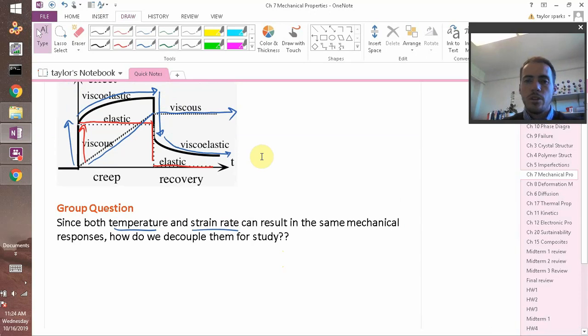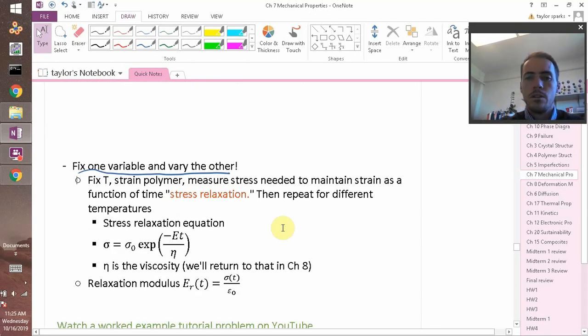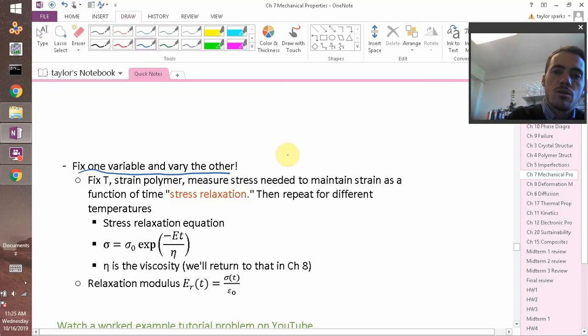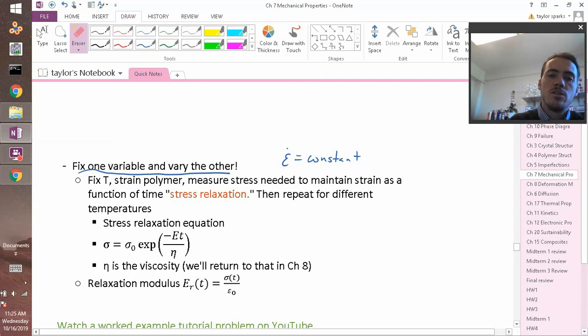So viscoelastic materials are important. And we know from what we've said so far that both temperature and strain rate can influence them. That you can get very different properties as you change both temperature and the rate at which you load things. So how do you decouple them for studying? Well, you fix one variable and then you vary the other. For example, you could fix temperature, take a single temperature. You can strain your polymer, measure the stress, the whole stress versus strain curve there, and then pick another temperature and repeat that process. In each case, the strain rate would need to be constant.